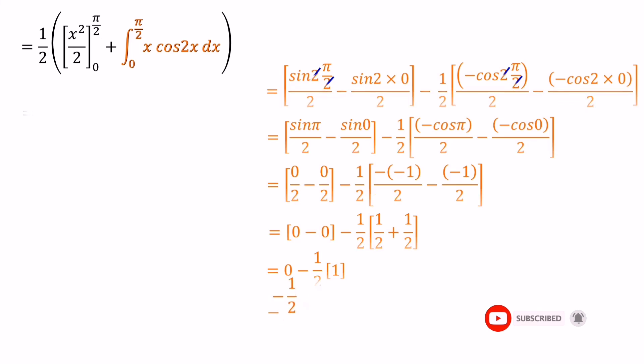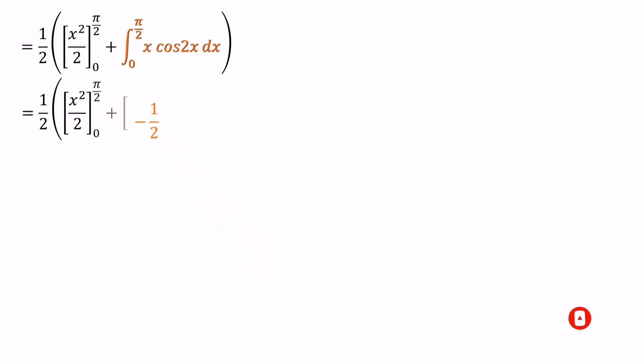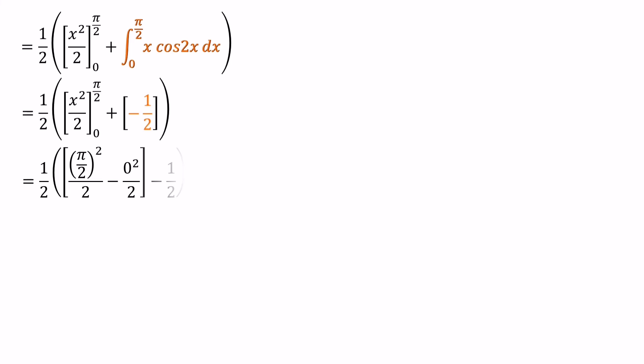Now we can substitute the upper and lower limits for the x squared over 2 value. The upper limit is pi over 2 and the lower limit is 0. Pi over 2 squared equals pi squared over 4. Pi squared over 4 divided by 2 equals pi squared over 8.